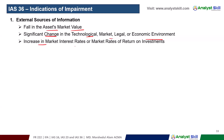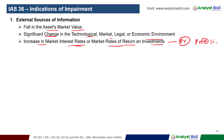Another external indicator is an increase in market interest rates or required market return on investment. Since value in use is calculated by discounting future cash flows using a discount rate — the DCF present value factor — if the market interest rate rises, for example to 15%, the present value of the asset's future cash flows falls, triggering an impairment review.